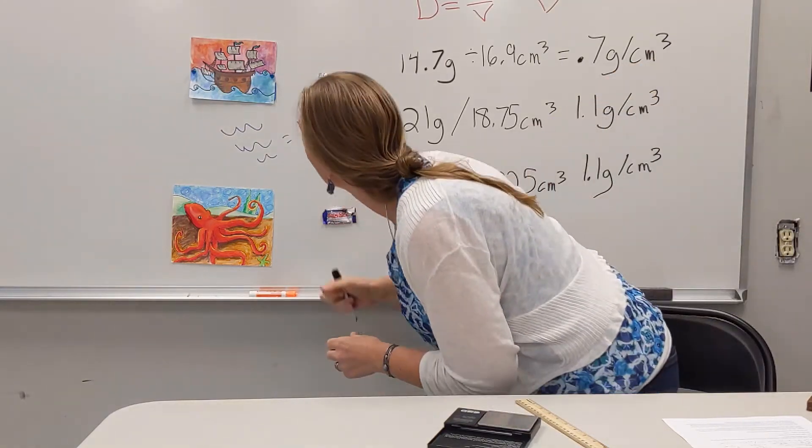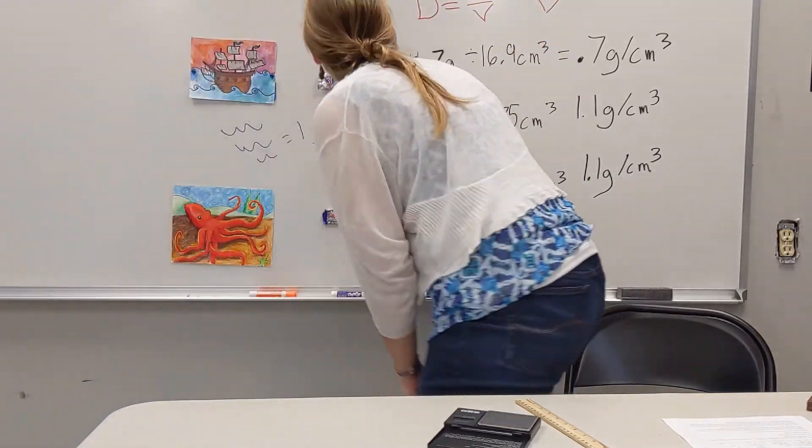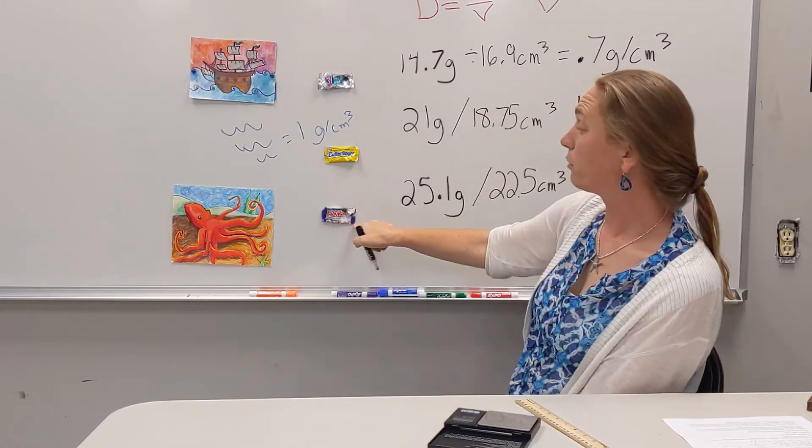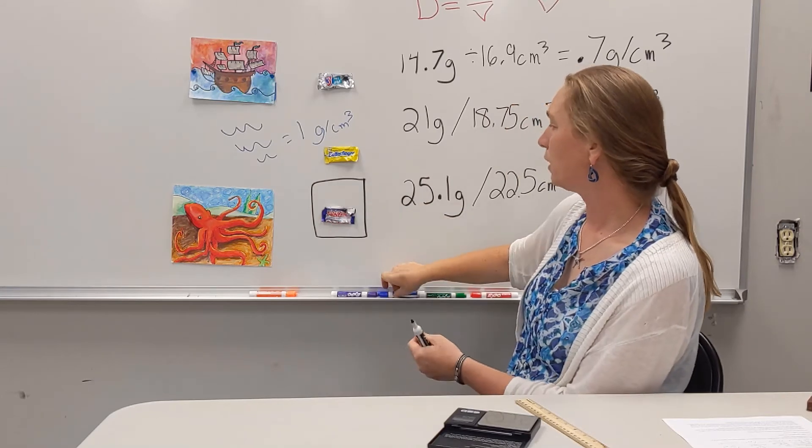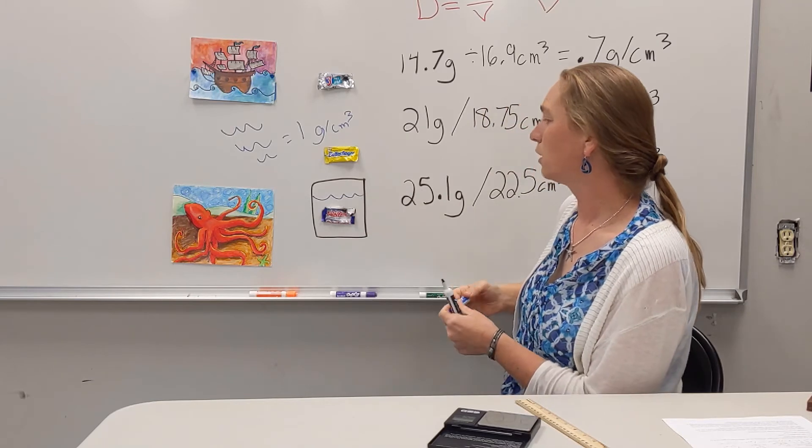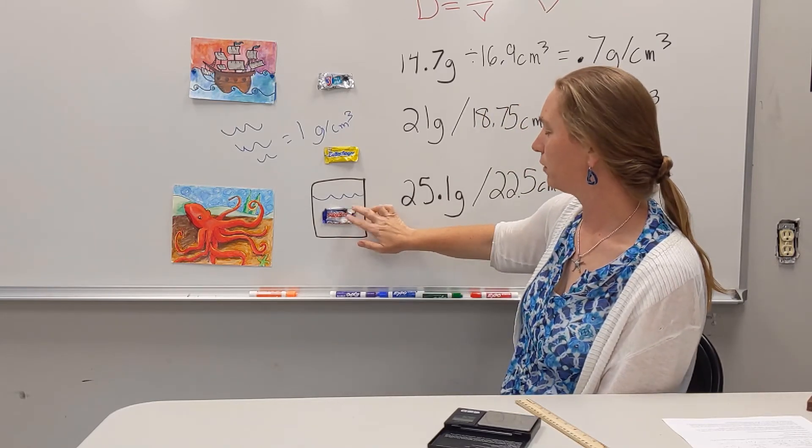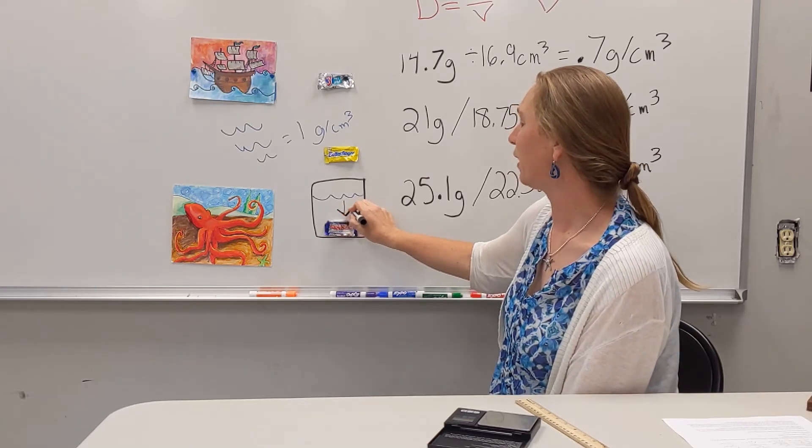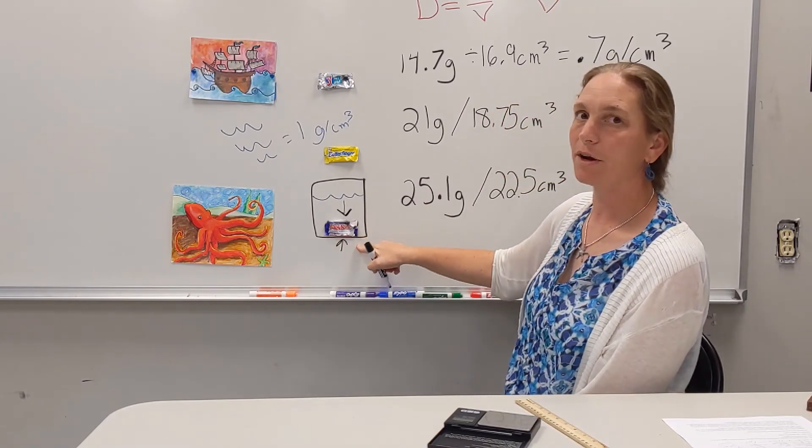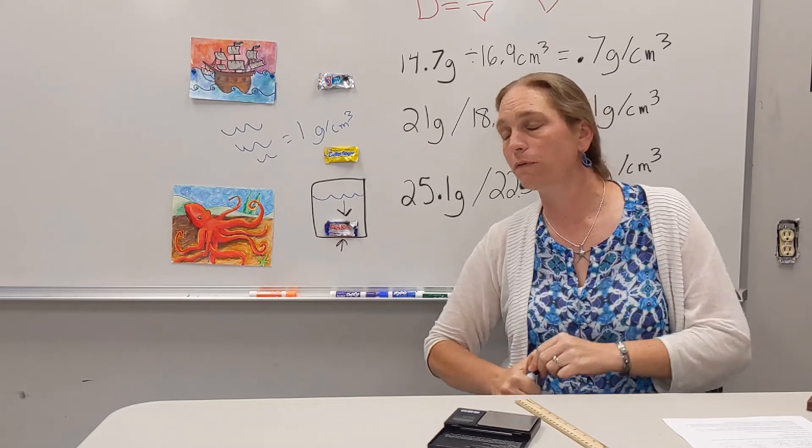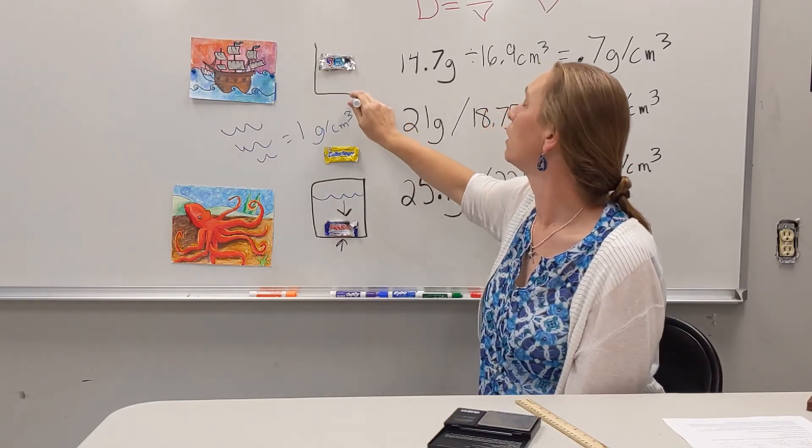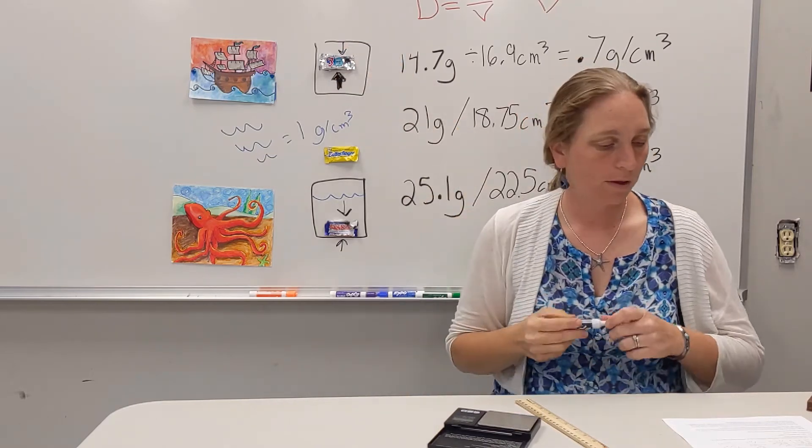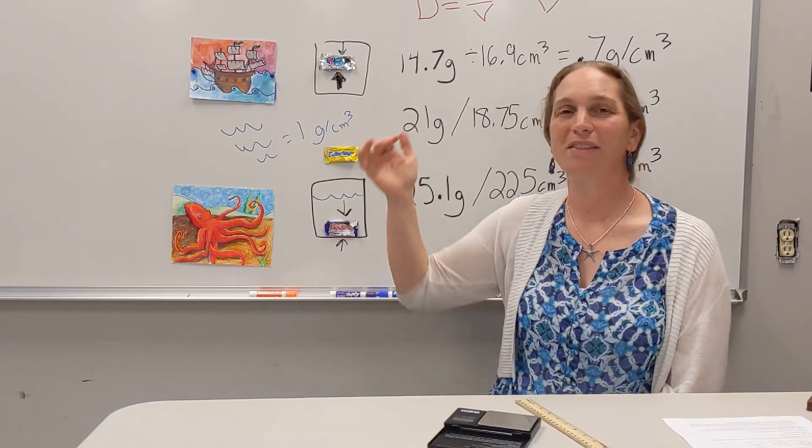So if I were to draw my candy bar in water, I don't know if you can see that. Let's do the Baby Ruth. And here's my water. Is that Baby Ruth going to sink or float? It's going to sink because it's more dense than water. So we would say that the gravity then is stronger than the buoyant force. It isn't very buoyant. It's going to sink. The Three Musketeers should be buoyant. It should float. It should have a greater buoyancy than the water. It should have a greater buoyancy than the gravity pulling it down.